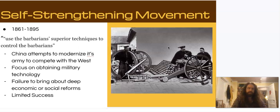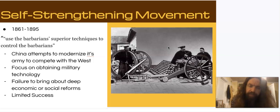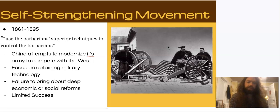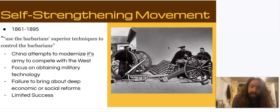After the Taiping Rebellion and the second Opium War, China decided it was time to try and modernize — whatever they were doing wasn't working and maybe they should try to copy some of what Europe was doing. This is called the Self-Strengthening Movement. As one Chinese official described it, they wanted to use the barbarians' superior techniques to control the barbarians. China's main focus was obtaining western modern military technology: new cannons, possibly machine guns, steamships, rifles — stuff like that.